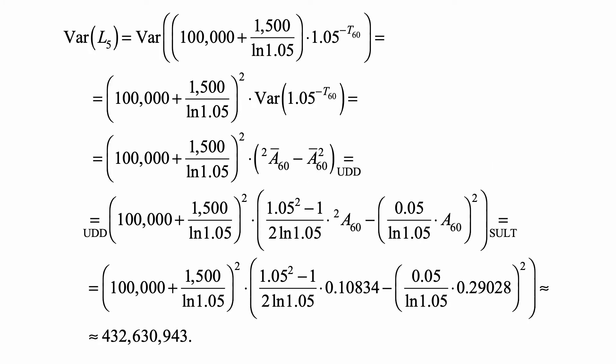Here's the variance. It's the variance of that first expression. That's the constant (100,000 + 1,500/ln(1.05))² times the variance of 1.05 to the minus T₆₀.